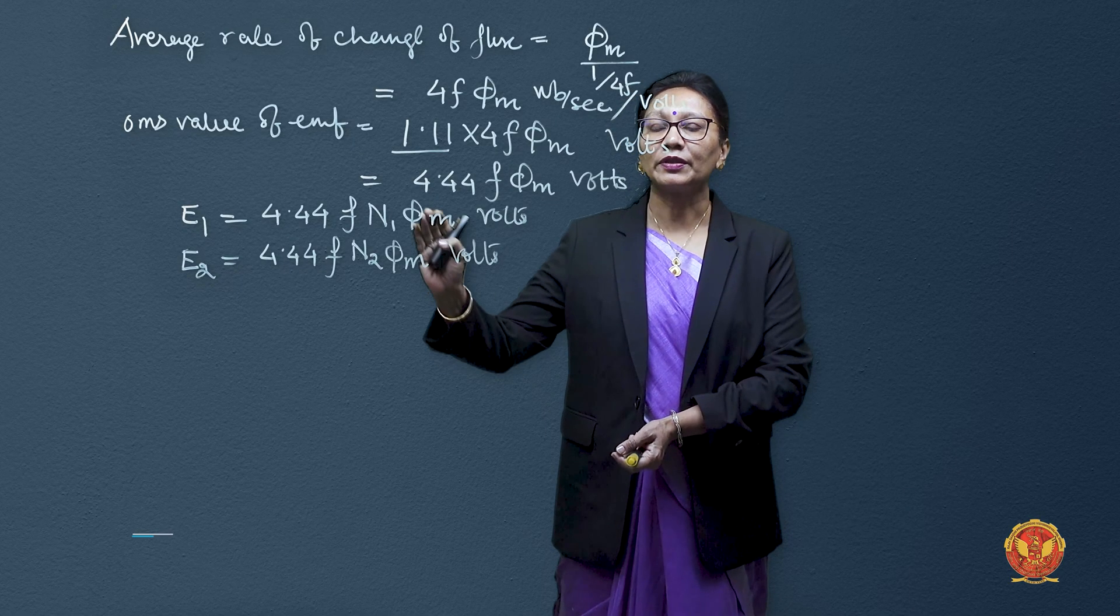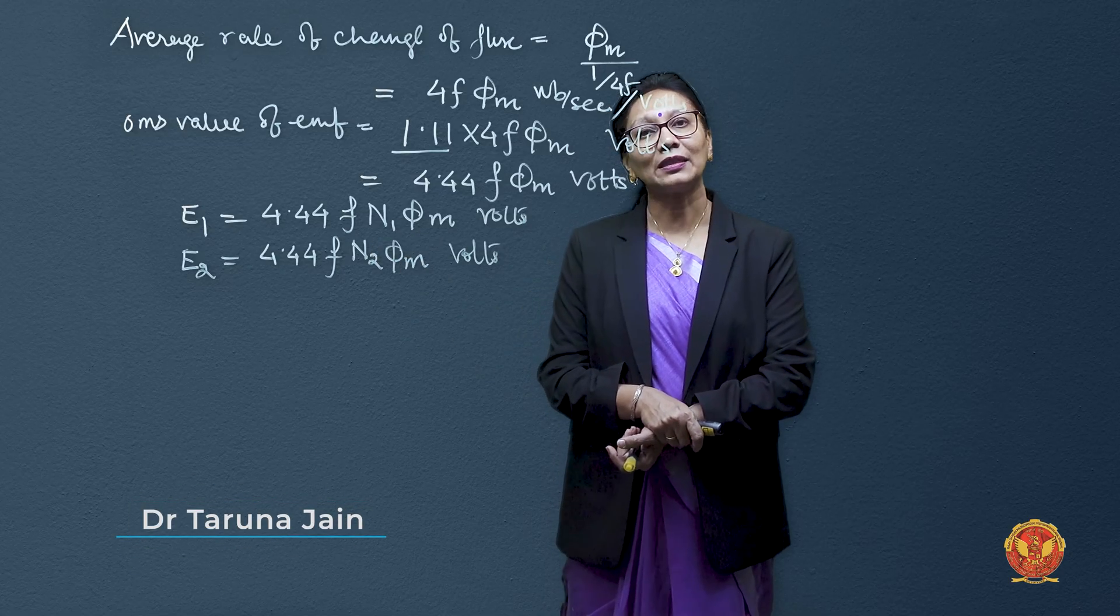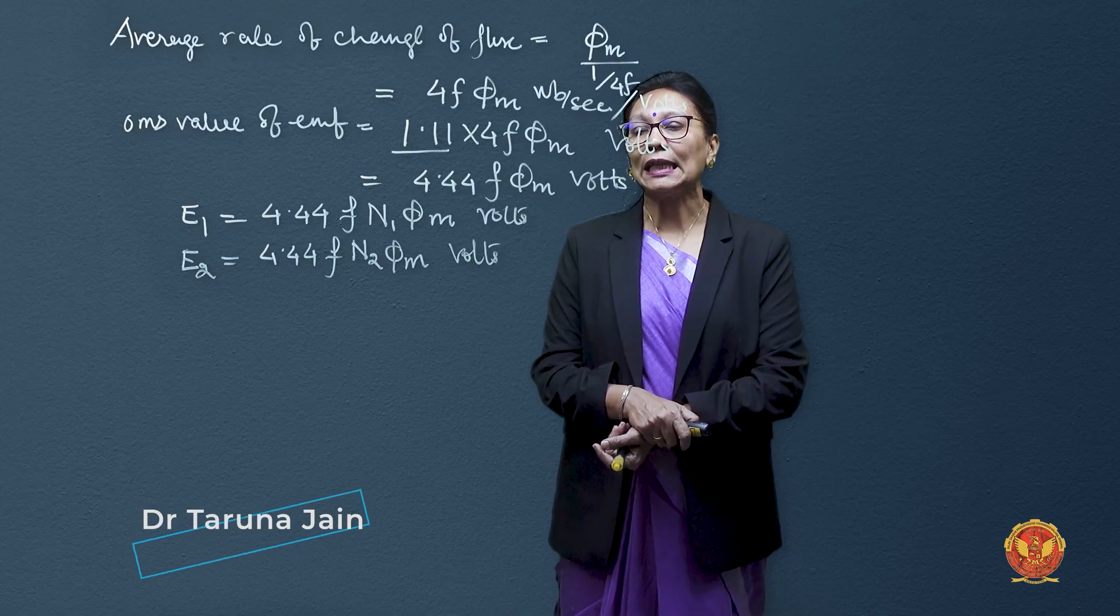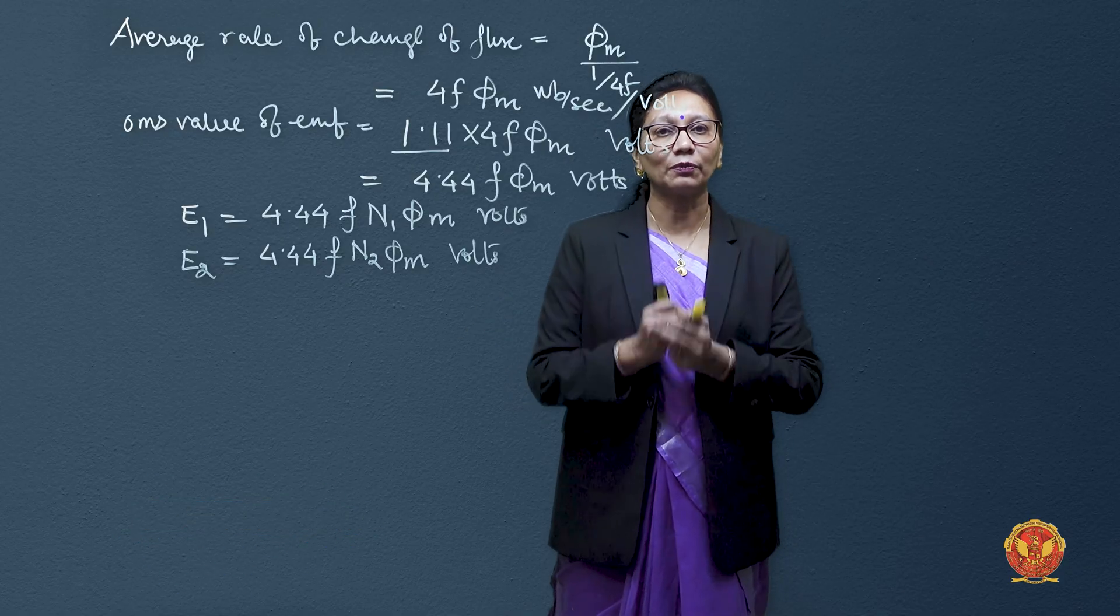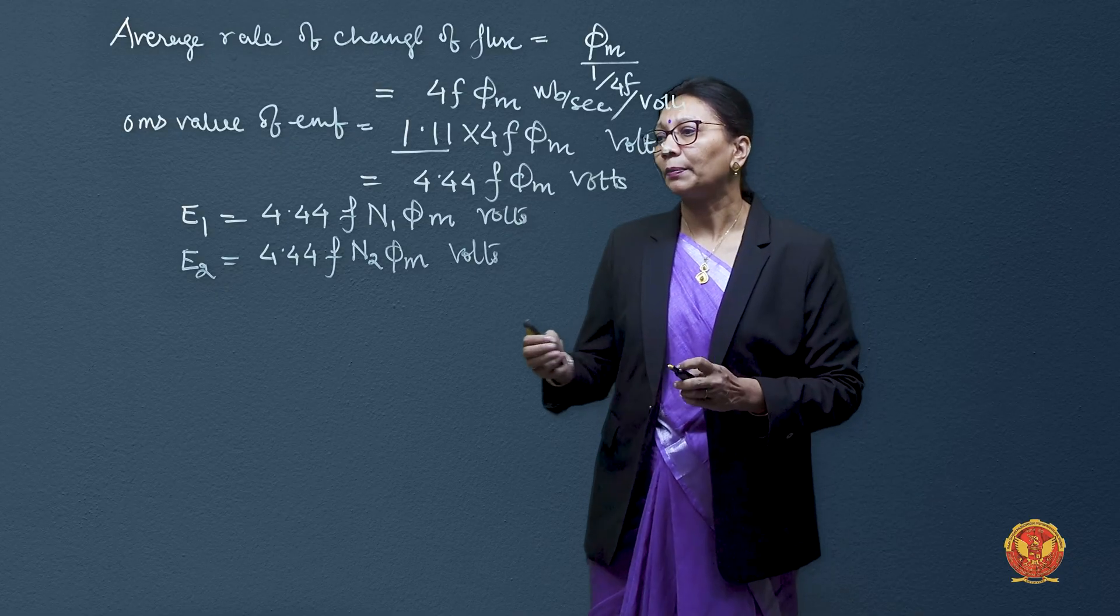So these two EMFs generated in primary and secondary winding must be related with some constant so that we can easily transfer the quantities from one side to other.